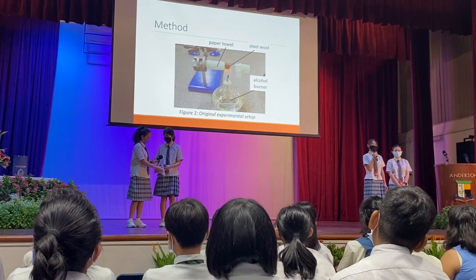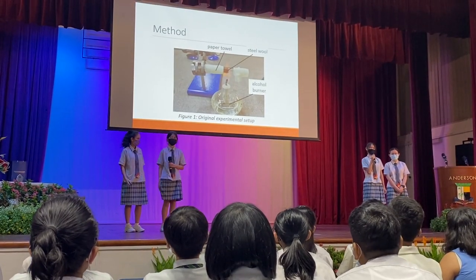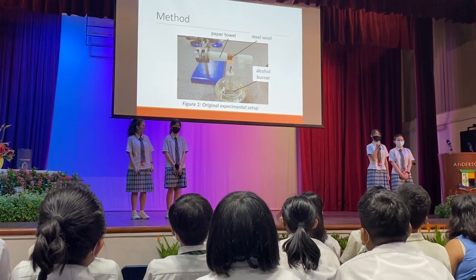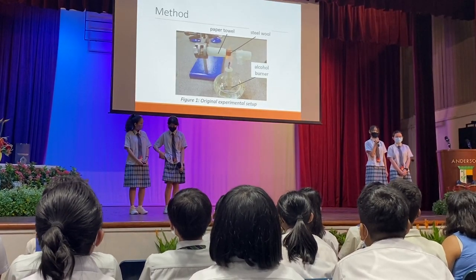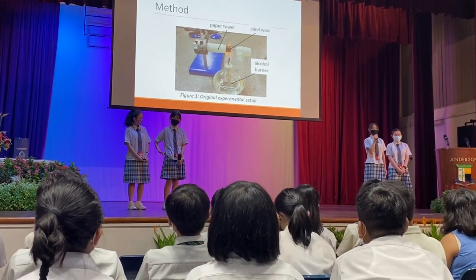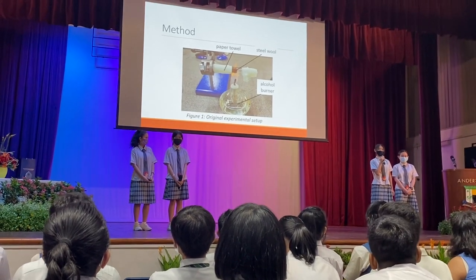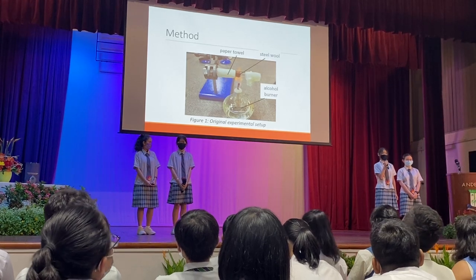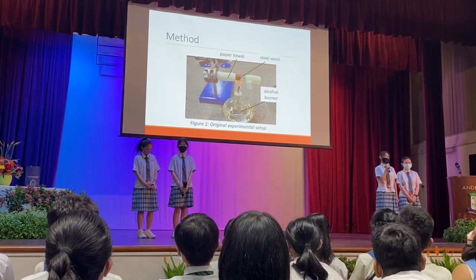In this experiment, we used test tubes of different dimensions, steel wool, a wet paper towel, a retort stand, an alcohol burner, a balloon, and a magnet. First, we rolled the steel wool and twisted it one-third the length of the test tube away from the closed end. Next, we placed the test tube horizontally and used a short stand to hold it in place. Afterwards, we wrapped the wet paper towel around the test tube, partially covering the steel wool. Lastly, we placed an alcohol burner below the steel wool and lit it.